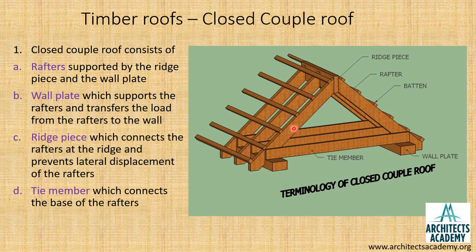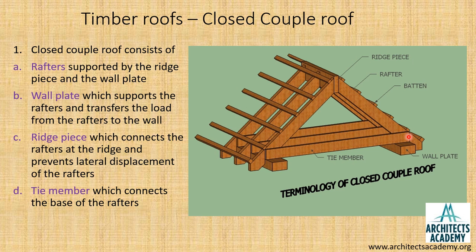This is a three-dimensional view of a closed couple roof. Let us try to see the components in detail. The inclined members are called as the rafters. The member at the bottom, exactly above the wall plate connecting the two rafters, is called as the tie member. The tie member is connected to the rafters by simply nailing it — there is no special joint between the tie member and the rafter.